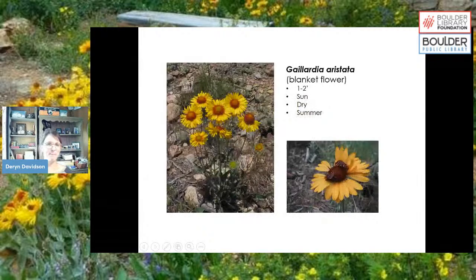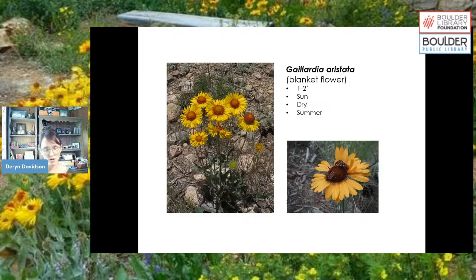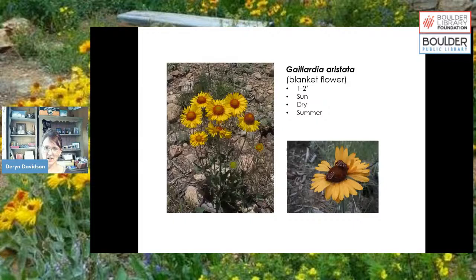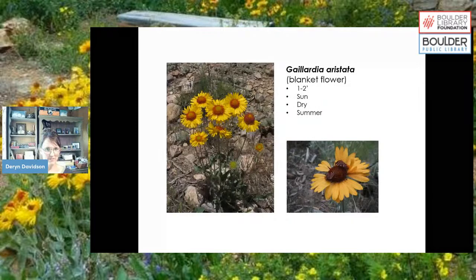Now I'll cover some plants that lend themselves well to our urban environments along the front range. The first is Gaillardia aristata, or blanket flower. There's also Gaillardia pulchella, also called blanket flower, which is a little more red on the petals — but that one is native further east, not our area. If you want to go strictly native, Gaillardia aristata is the one you're after.